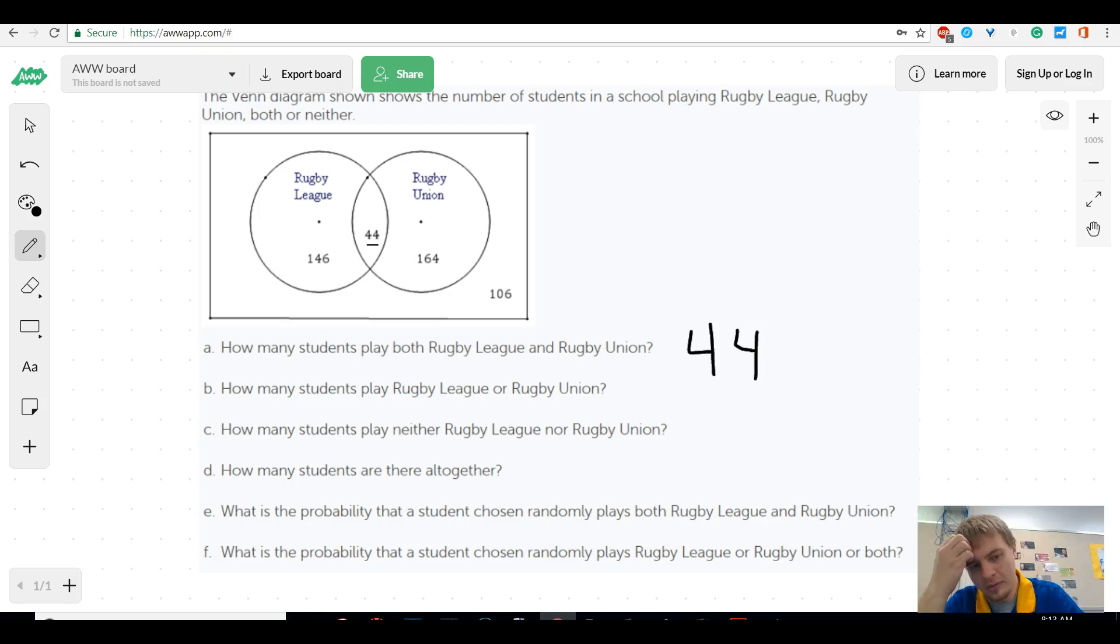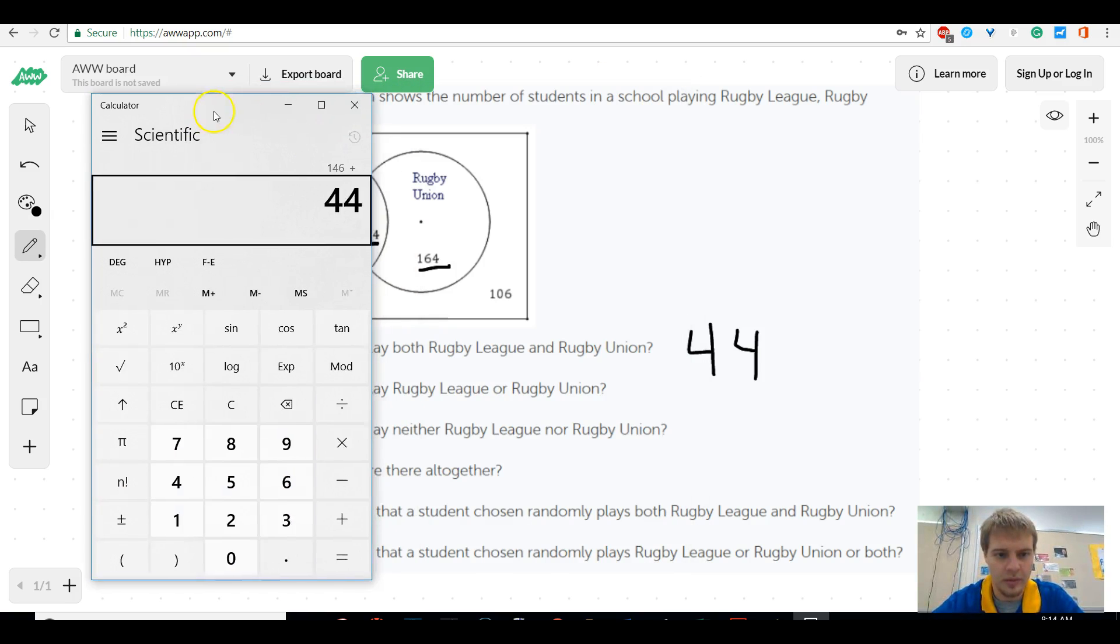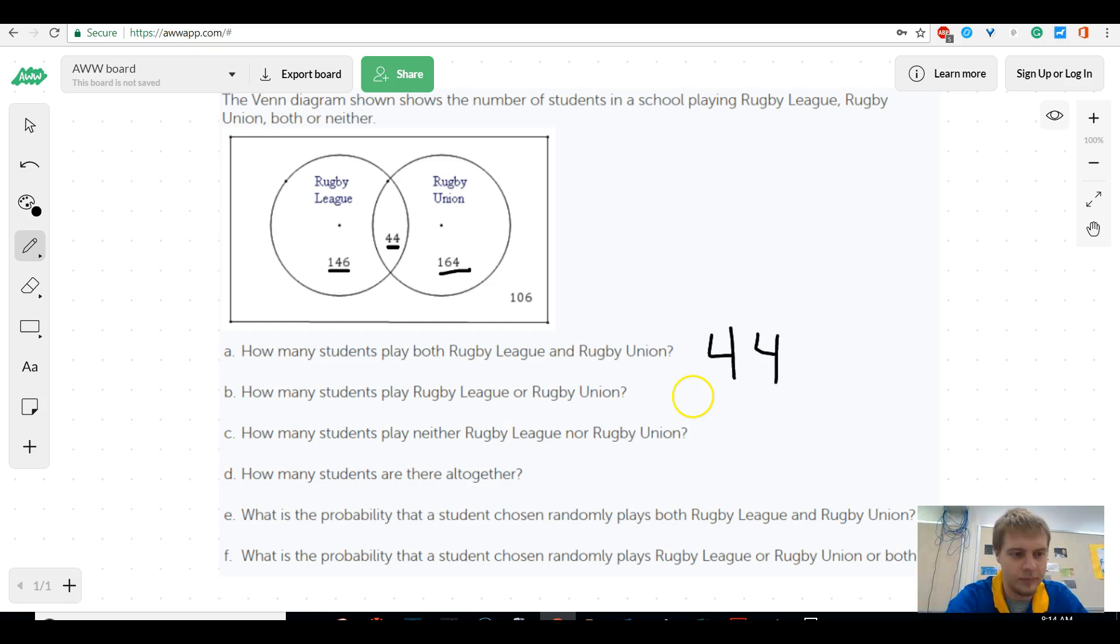It says how many students play for this one or this one? Well, that would include all of these 146, that include these middle 44 because they play for one of these two leagues, and this would include the 164. So it would be both these circles in the or category. So we'll just add this up: 146 plus 44 plus 164, and that's 354.